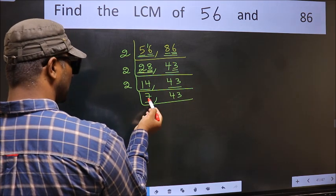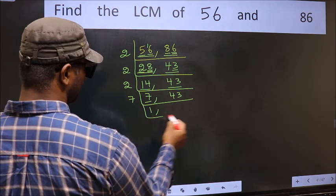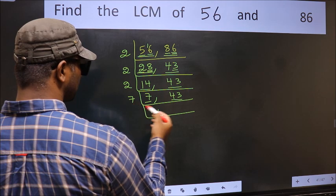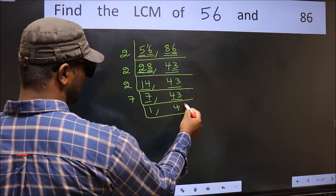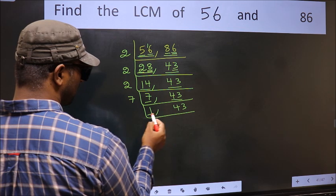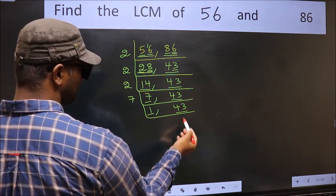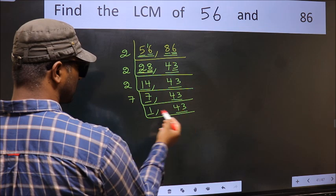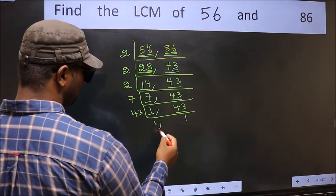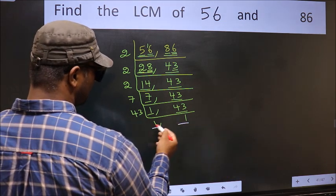Now we have 7. 7 is a prime number, so 7 ones are 7. The other number is 43; it is not divisible by 7, so write it down as it is. Now we got 1 here, so focus on the other number, 43. 43 is a prime number — 43 ones are 43. So we got 1 in both places.